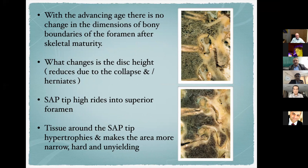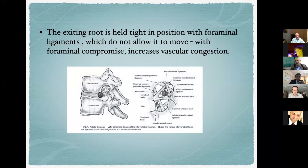With advancing age, the bony boundaries of the foramen do not change. What changes is the disc height — reduced due to collapse — along with the superior articular process tip high-riding into the superior foramen, with surrounding tissue hypertrophying and making the area harder and unyielding. The exiting root is tightly held in position by foraminal ligaments, and with foraminal compromise there is increasing vascular congestion, giving rise to typical symptoms of heaviness, tingling sensations, numbness in the legs, and claudication.